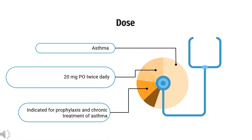How to use Zafirlukast? For asthma, indicated for chronic asthma treatment and prophylaxis: 20 mg orally twice daily. Administration: Take at least 1 hour before or 2 hours after meals. Take at regular intervals.